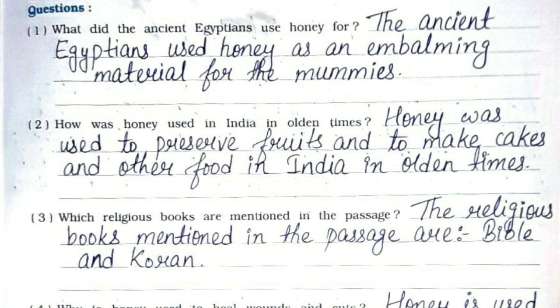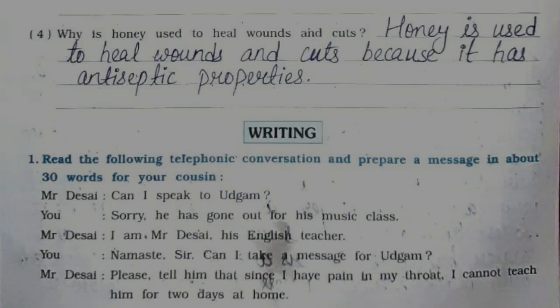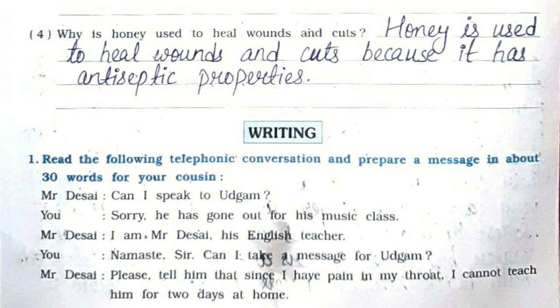Reading Comprehension question answers. 1. What did the ancient Egyptians use honey for? The ancient Egyptians used honey as an embalming material for the mummies. 2. How was honey used in India in olden times? Honey was used to preserve fruits and to make cakes and other food in India in olden times. 3. Which religious books are mentioned in the passage? The religious books mentioned are the Bible and the Quran. 4. Why is honey used to heal wounds and cuts? Honey is used to heal wounds and cuts because it has antiseptic properties.